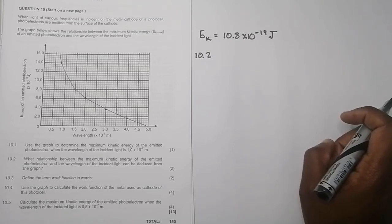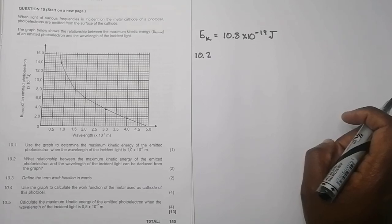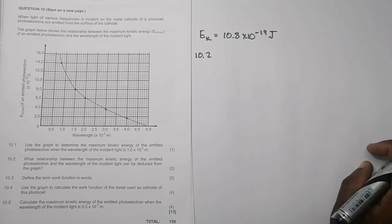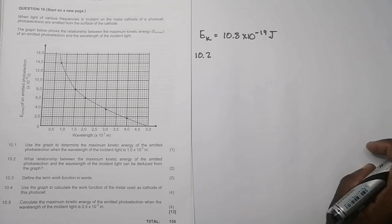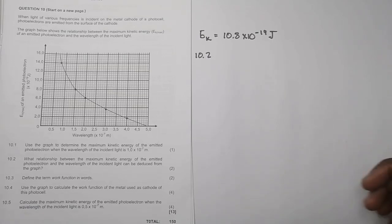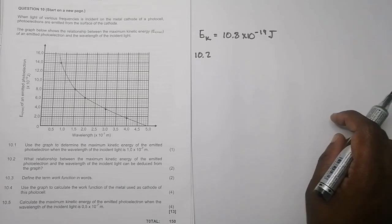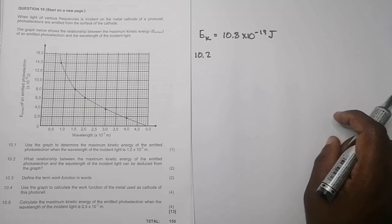And then they say define the term work function. We say that the work function is the minimum energy required to emit electrons from a metal surface. I get the feeling you guys are going to do so well when it comes to the final exam.